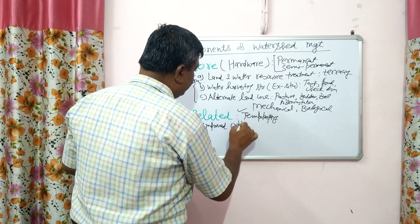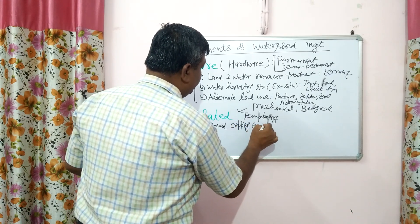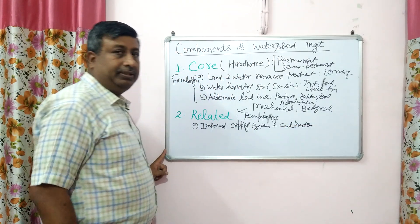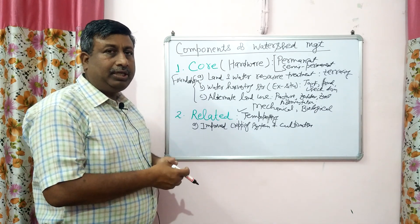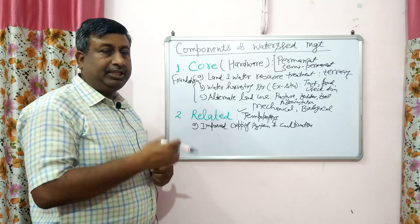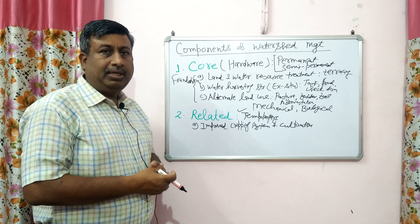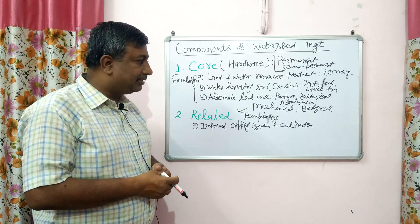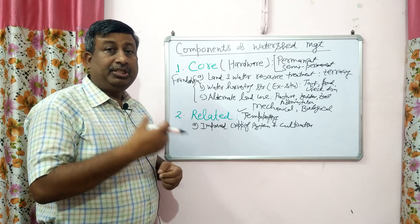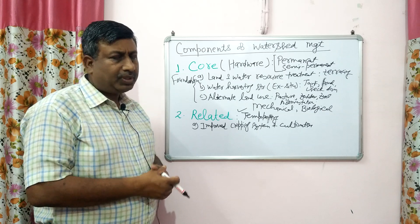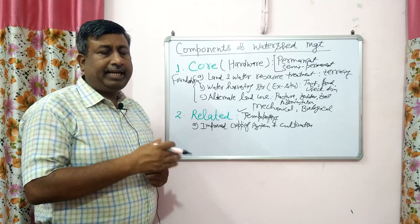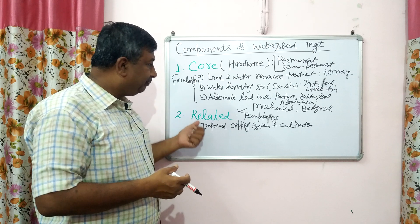Important practices in the related component include improved cropping systems and cultivation practices. The objective is to increase crop productivity by utilizing the stored soil moisture. Improved cropping systems include better crop varieties and developing a cropping system that gives more profitability with no risk against disease and insects. Improved cultivation practices include deep plowing, which enhances soil moisture storage, tillage, contour farming, proper fertilization, weed management, and disease control.